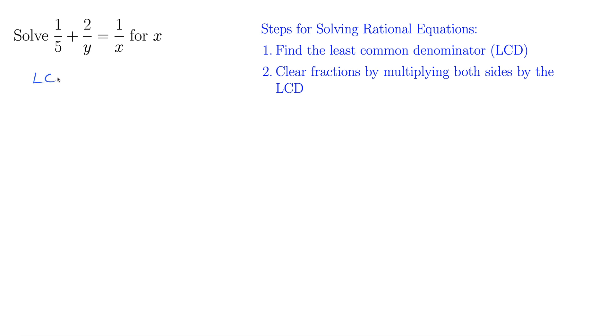Let's see here. So our LCD, alright, so to find the LCD, you start with the first denominator, 5, and then you go on to the next one and you say, do I have to expand it in any way to include the next one? Well, yes, we do. We need to add in a y. And then you go on to the next one. Do we need to expand it in any way to include x? Well, yeah, we need an x. There we go. So 5yx or 5xy is our LCD there.